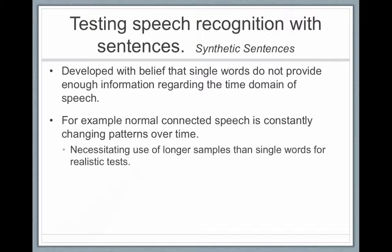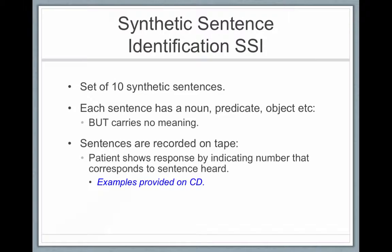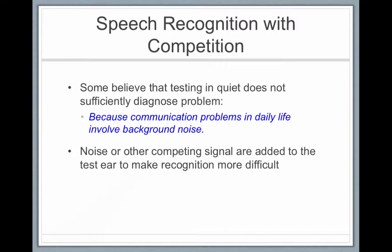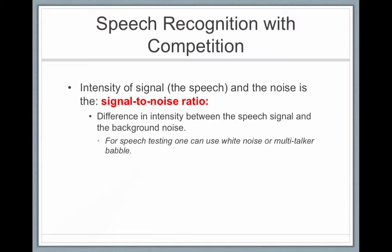The PB — that phonetically balanced word list I spoke about before — is the most common test for speech recognition score. There are also sentences. You might want to add noise, background noise, since we exist in a noisy world. Sitting in a sound-isolated chamber hearing simple words may not have as much validity. If you want to see how well a person does in a noisy environment, you can add background noise to the word lists. If you want to see how well a person is doing with their hearing aid, you could add speech and noise competition and manipulate the signal-to-noise ratio.